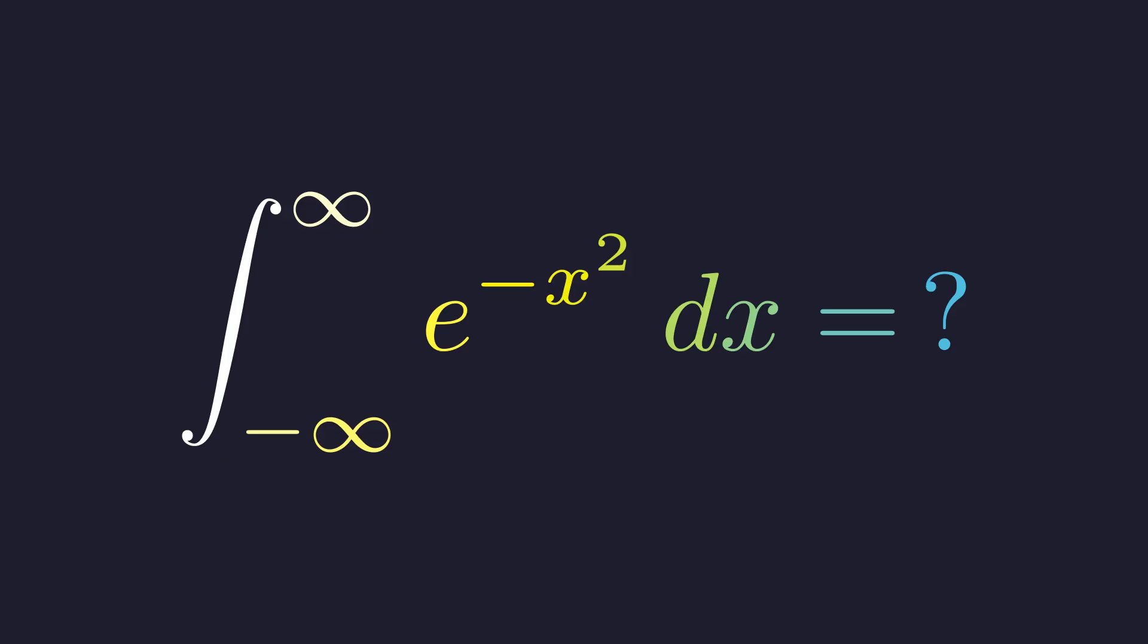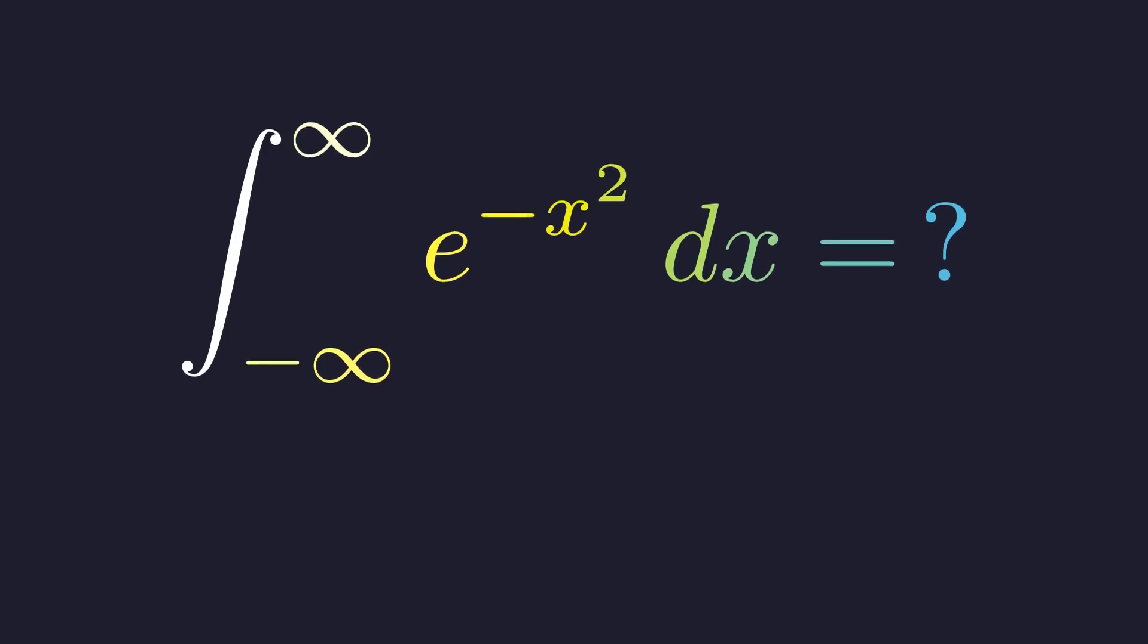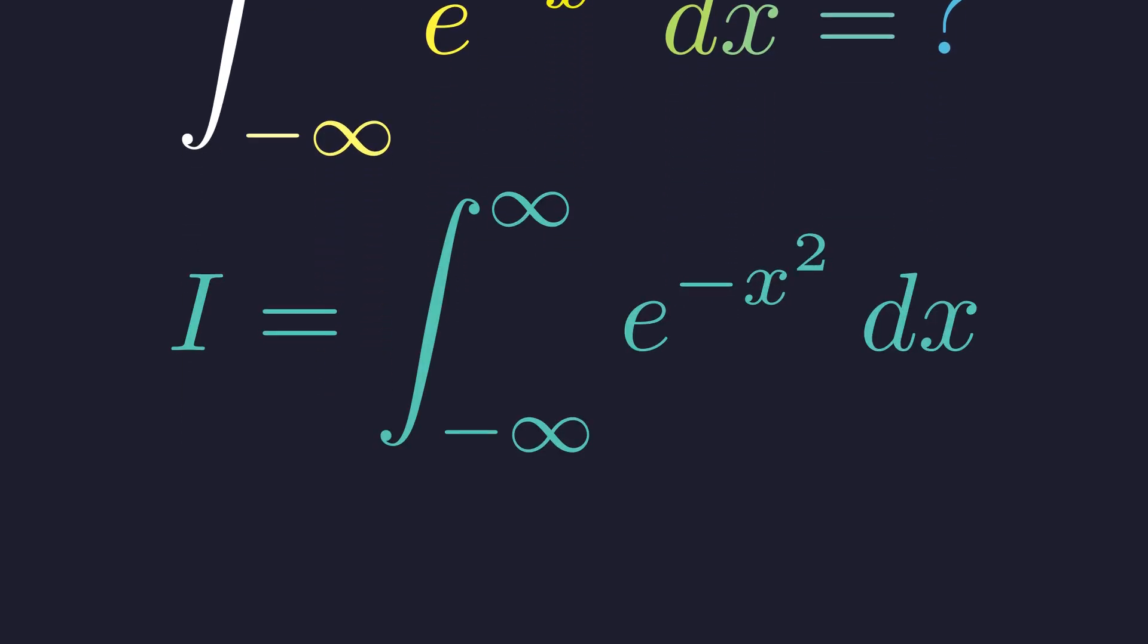There's no elementary antiderivative for e to the negative x squared. But there's a really clever trick that makes this work. Let's call this integral i. So i is the integral from negative infinity to infinity of e to the negative x squared.